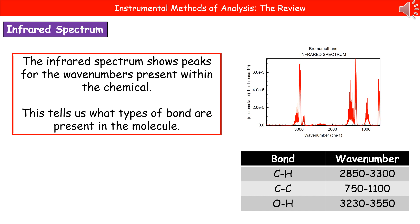The last instrumental method of analysis we're going to look at is the infrared spectrum. When we produce an infrared spectrum, what we get is a little graph that shows us peaks for the wave numbers which are present within the chemical. And those wave numbers correspond to the types of bond that we have present. On the right, I've given you the infrared spectrum for bromomethane, and underneath, I've just given you a sample of some of the bonds and their wave numbers.